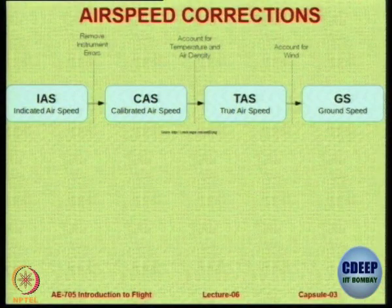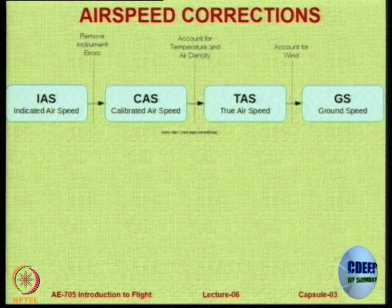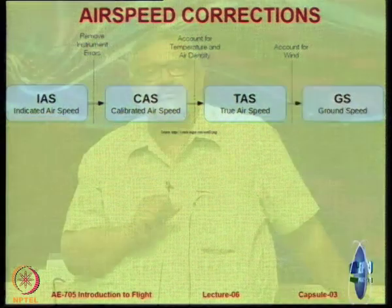For that we have to understand the working. The dynamic pressure in an incompressible flow is half rho V squared. So P_total equals half rho V squared plus P_static. If you subtract P_static you get half rho V squared. Half is the constant, but rho is the density of the air, and the density of the air does not remain constant as we go from one altitude to another.